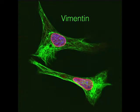Inside our cells are tiny microscopic filaments that act as an internal scaffold of the cell. These filaments are called the cell cytoskeleton and it is made up of three different polymeric networks: F-actin, microtubules, and intermediate filaments.